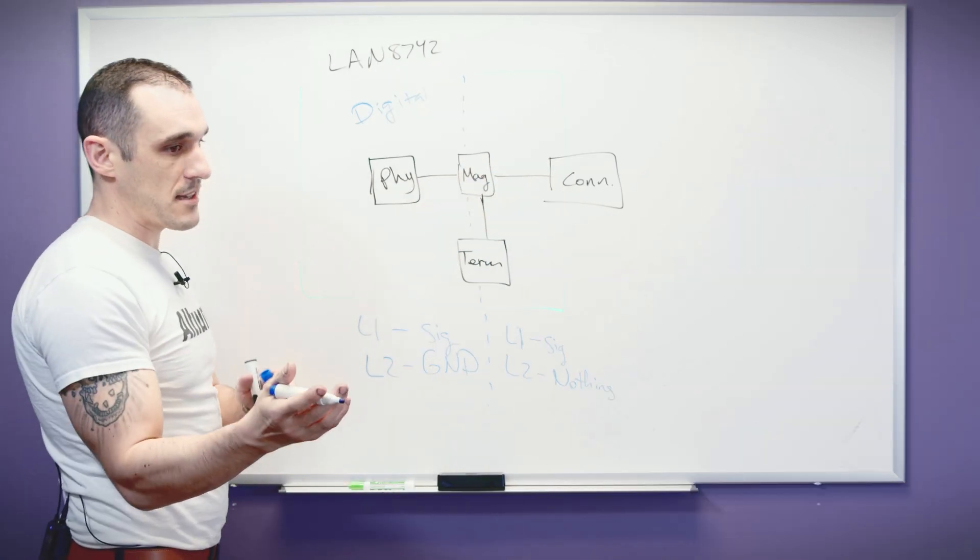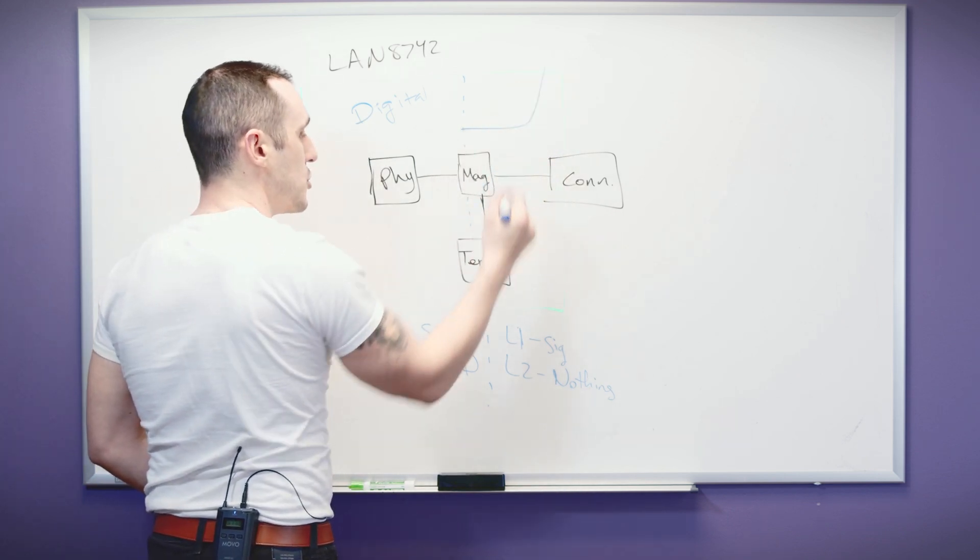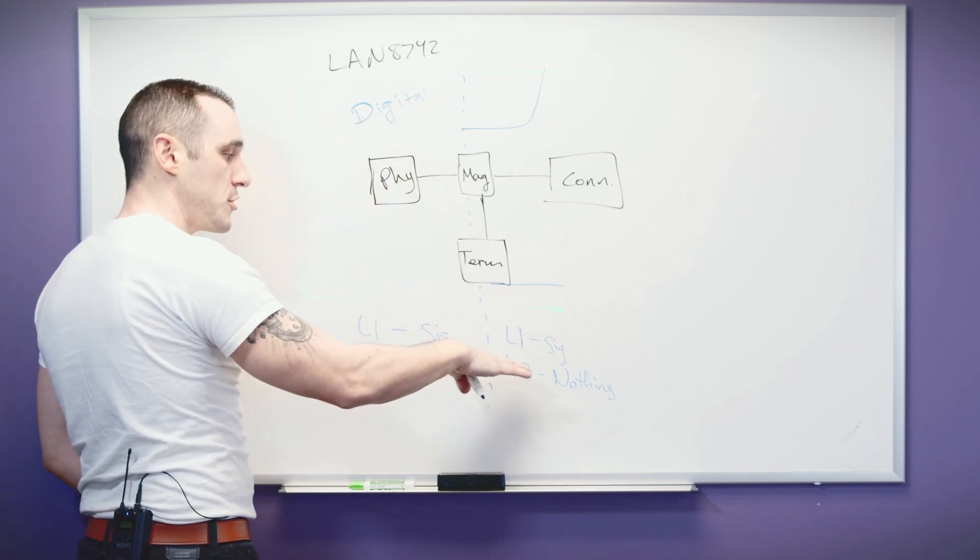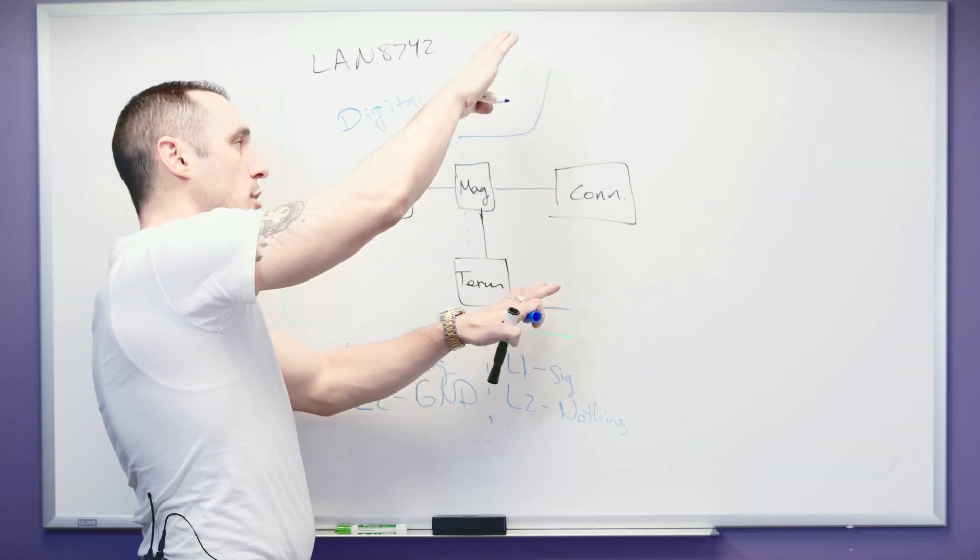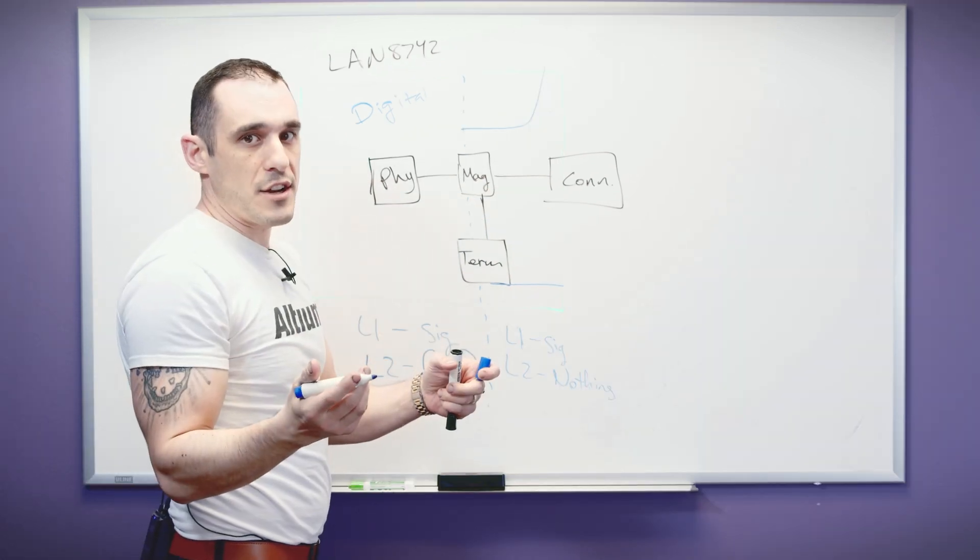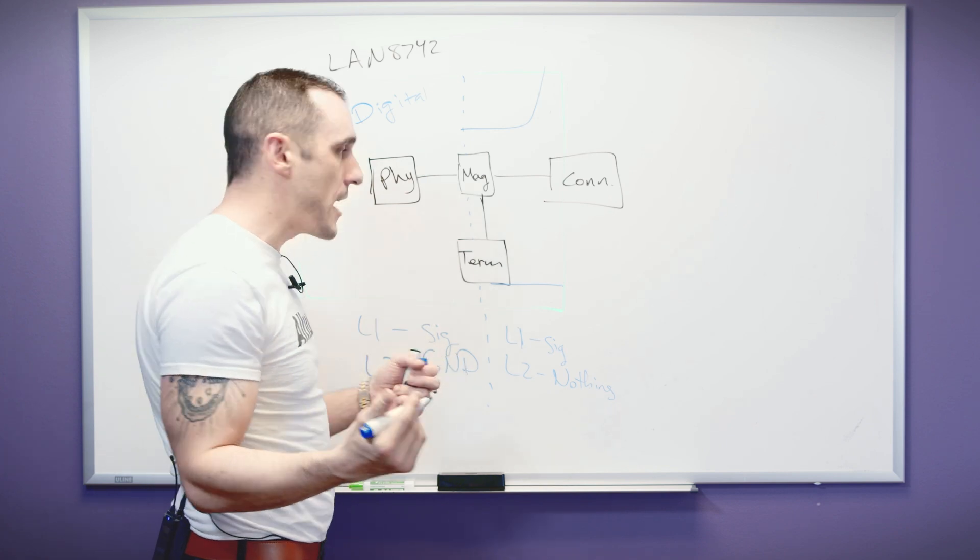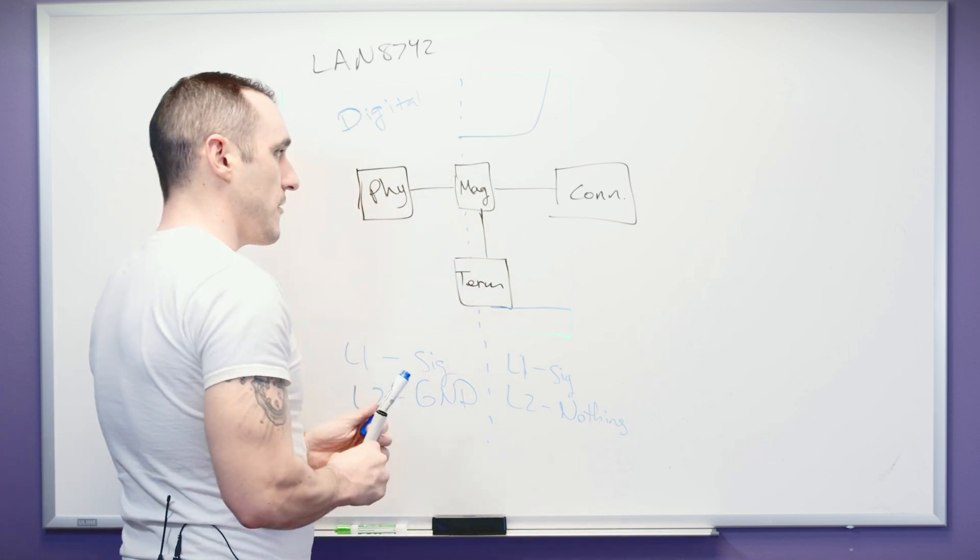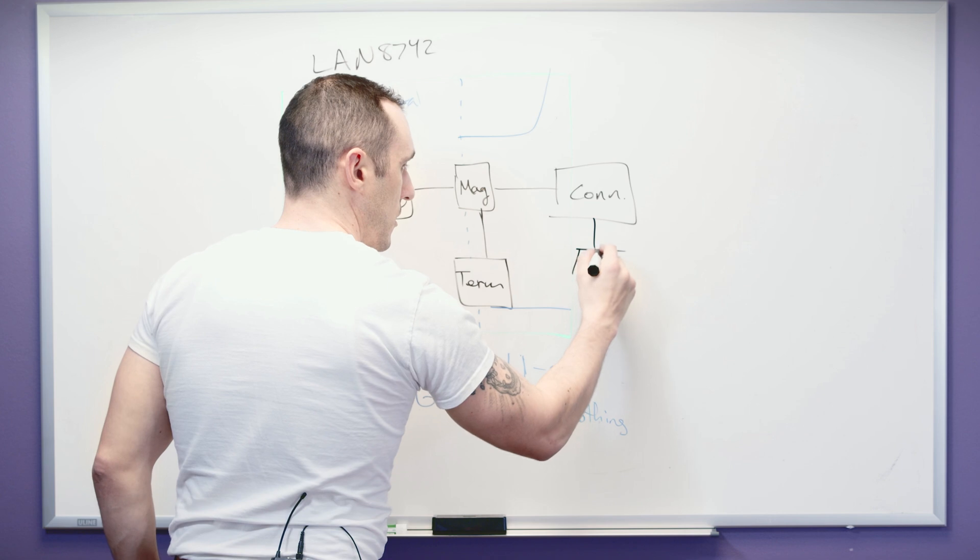Now we did see in that example in the LAN 8742 application note that there was some other ground regions and some copper pour on this layer on L2 in this region of the board. And that's fine. But the point is that there's a large separation between those copper pours and these lines. So this is one strategy for doing it. And if you look at a Renesas application note on industrial Ethernet you'll see that they actually do recommend doing this.